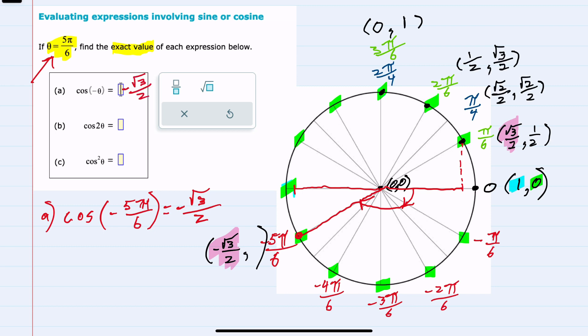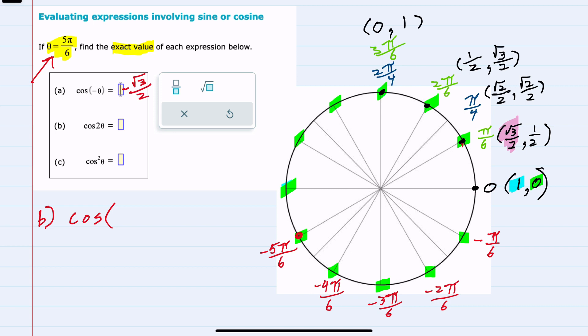And then I'll turn my attention to b. b is the cosine of 2 times theta. So we need 2 times that 5π/6, which would give us a 10π/6. And again, I left it as 6 because that's going to help me do the counting to figure out which angle this is. I still have in quadrant 1, written here in green, my π/6, 2π/6, 3π/6. I'll keep labeling those as 4π/6, 5π/6,